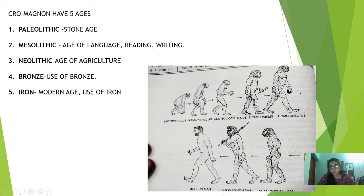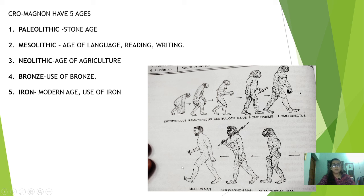In Australopithecus they had the grasping hand — you can see that here. Homo habilis looked like this and they started using tools. Homo erectus — their posture became more perfect. Neanderthal man, Cro-Magnon man — who started using culture — and now the modern man. You can see how evolution gradually took place during the time period.